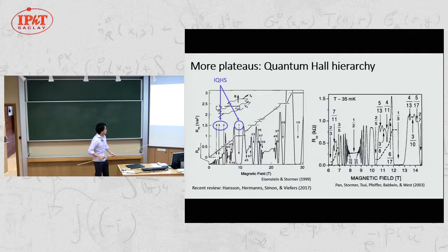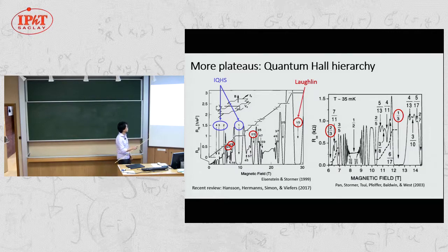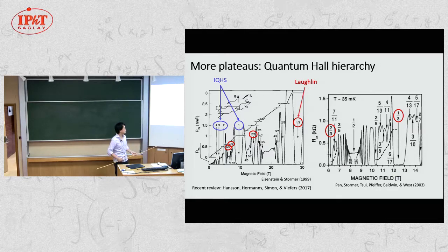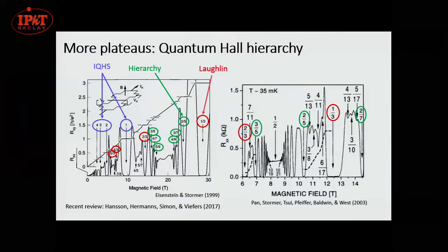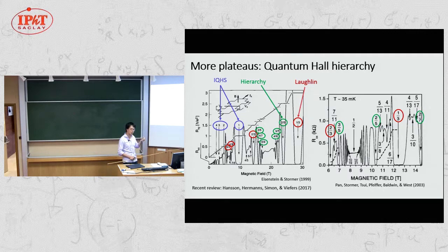The single-particle picture gives nice understanding of the integer quantum Hall state, and also one-third, two-thirds, four-thirds, and other fractional plateaus can be understood in terms of the Laughlin state. But you will see more plateaus, like two-fifths, three-sevenths, and so on. These cannot be understood just by taking the Laughlin wave function, so we want deeper physical insight into the Laughlin state.